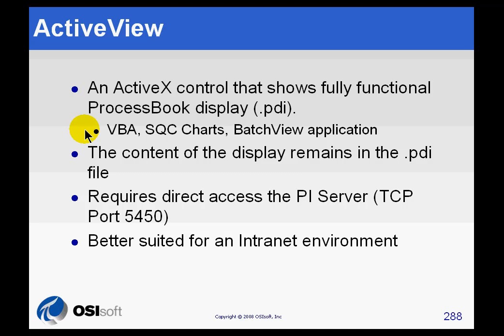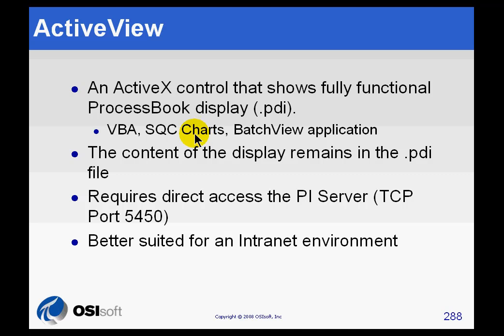So why are we discussing it now? Because ActiveView can be contained within an RT Web Parts display through something called the RT ActiveView Web Part. ActiveView is itself an ActiveX control, and the RT ActiveView Web Part is a Web Part that will contain it. ActiveView has features not found in a traditional RT Web Parts display — like when you have Visual Basic for Applications, Statistical Quality Control Charts, or similar things that you'd like to implement within a web page.